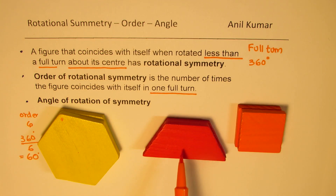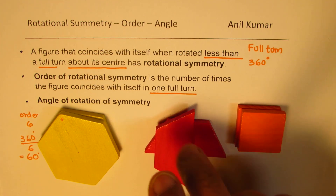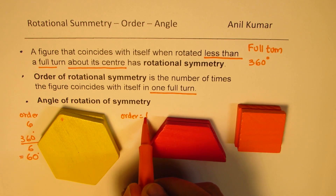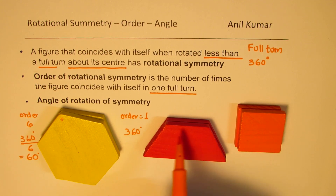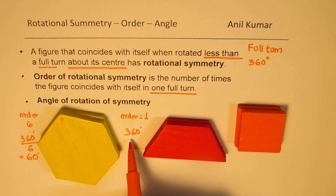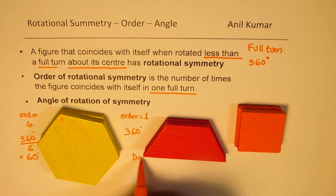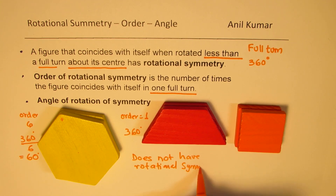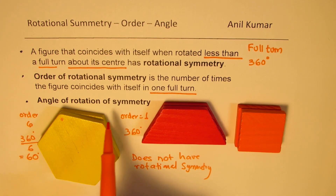In the case of the trapezoid, it does not have rotational symmetry. But it does match itself after one full turn, so it has an order of symmetry of 1. The angle of rotation, if at all it has one, is a full 360 degrees. Since less than 360 degrees it does not match itself, we say it does not have rotational symmetry. Normally, if an object does not have rotational symmetry, we will not ask for the angle of rotation.